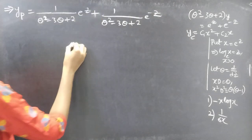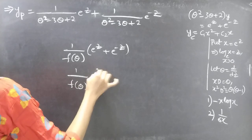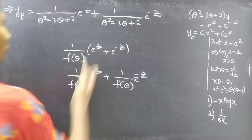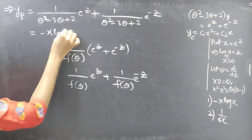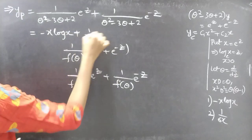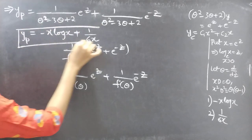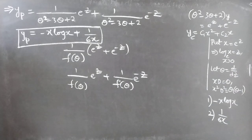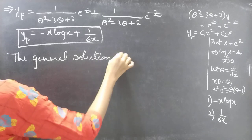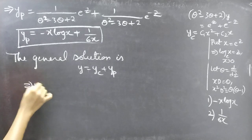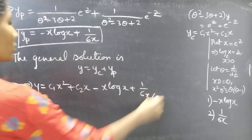Note that the sign is plus, not minus, because we have 1 by f(theta) into (e to the power z plus e to the power minus z), which splits into the two terms with a plus sign. So yp equals minus x log x plus 1 by 6x. We now have both yc and yp, so the general solution is y equals yc plus yp, that is y equals c1 x squared plus c2 x minus x log x plus 1 by 6x. This completes the problem.